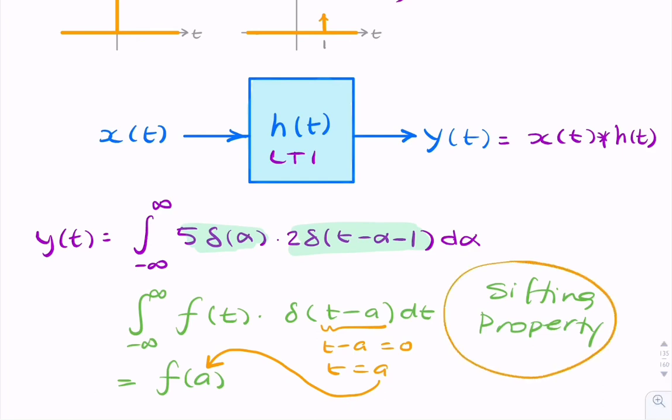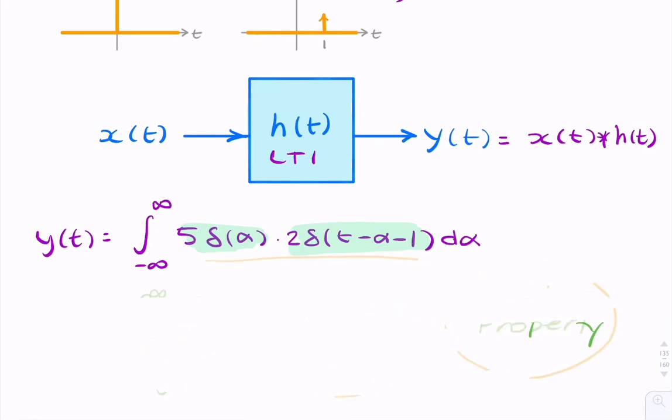So we can apply the sifting property to our integration here. So it doesn't matter which function we choose as the f or the x, and which we use as the impulse. So what I will do is I will use this as my impulse, and this is my function. So I will find the value of alpha, for which this argument is 0, i.e. for which the impulse function is non-zero.